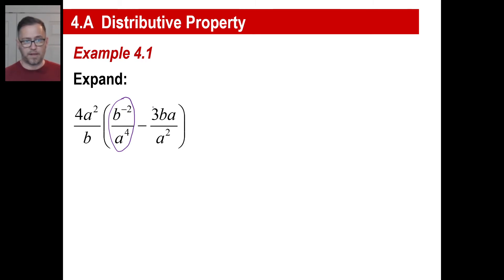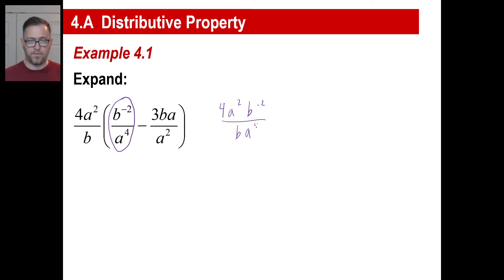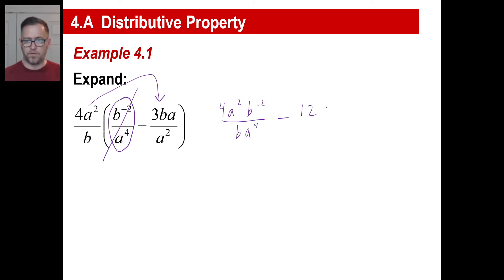Let's just do numerator times the numerator. That's going to be 4a squared and then b to the negative 2. For the denominators, it's going to be b and then a to the 4th. Now let's go ahead and take this and distribute it to that one. I've got a minus there — 4 times 3 is 12.